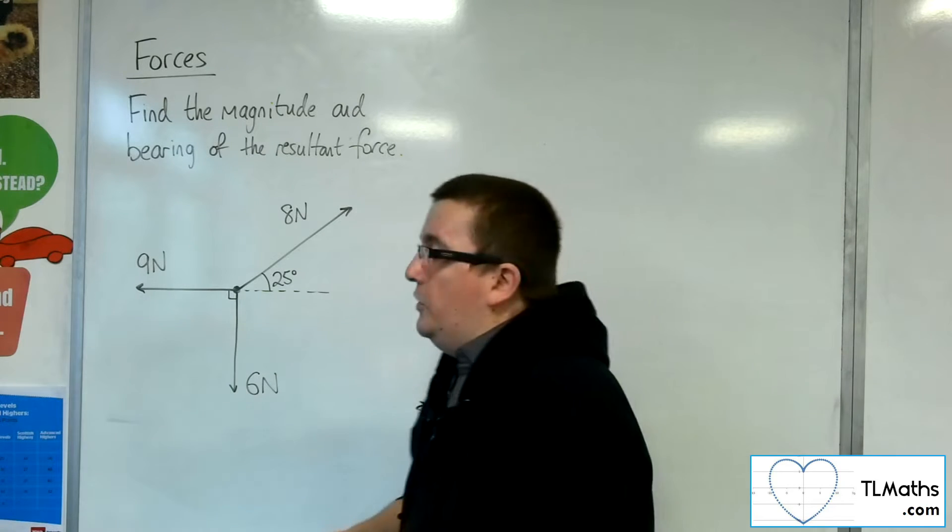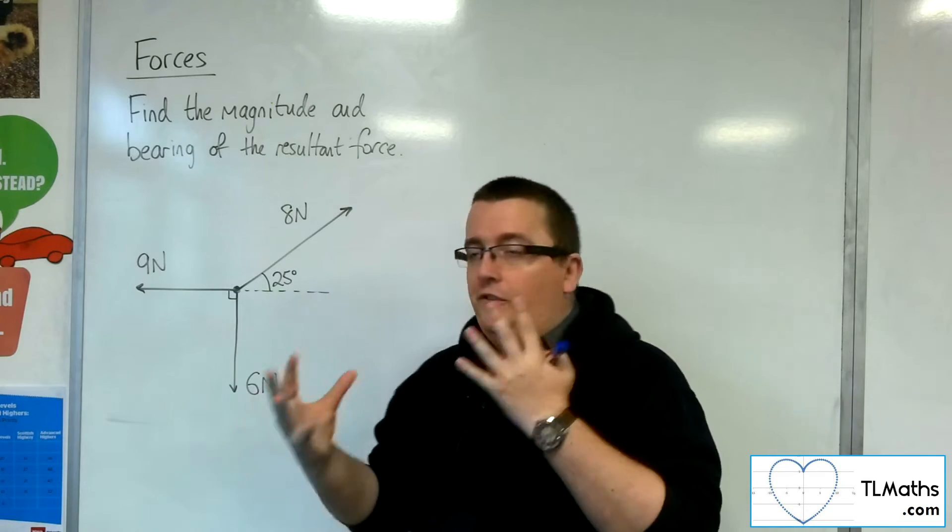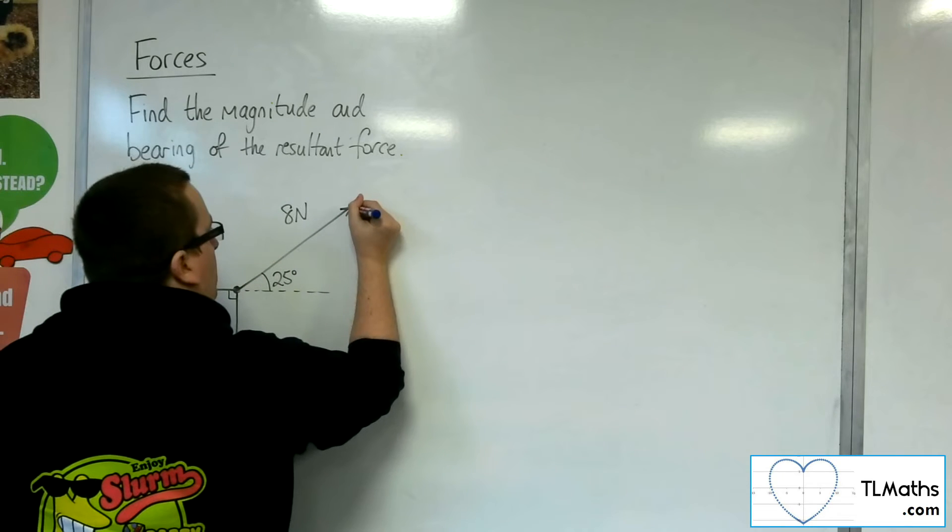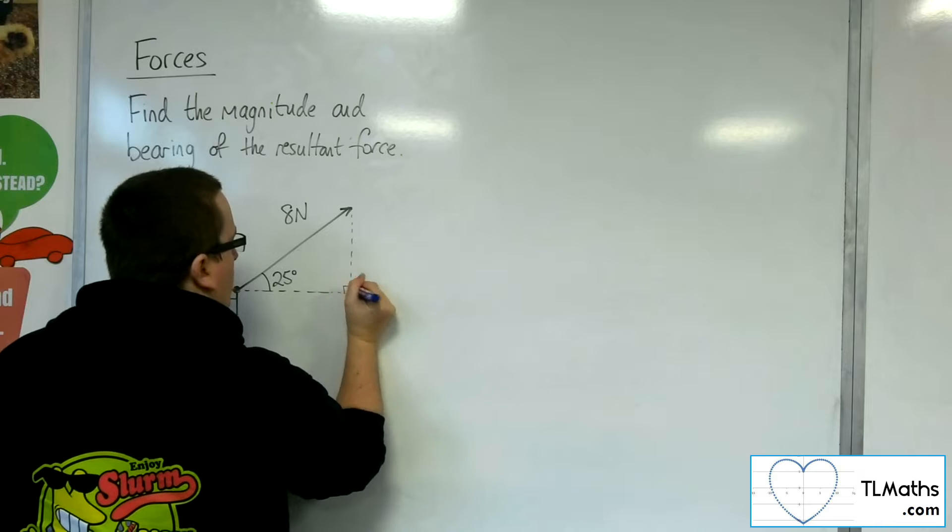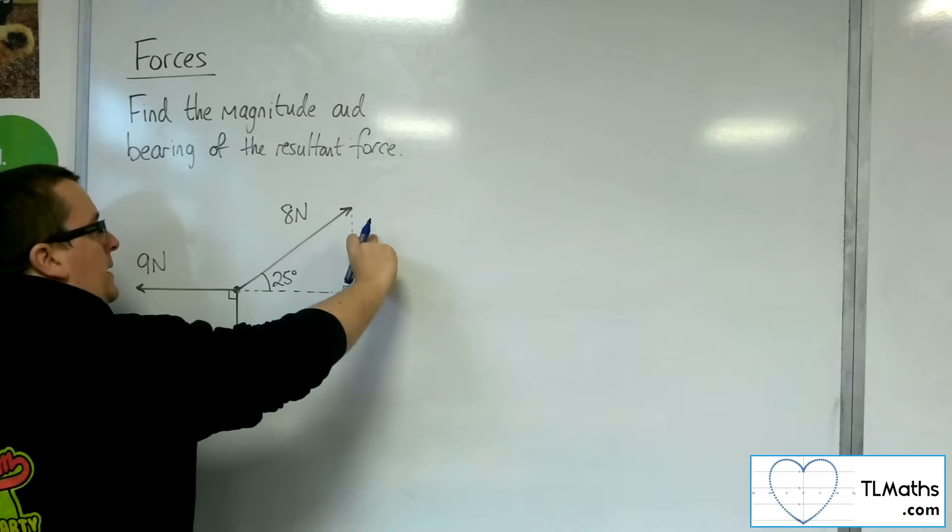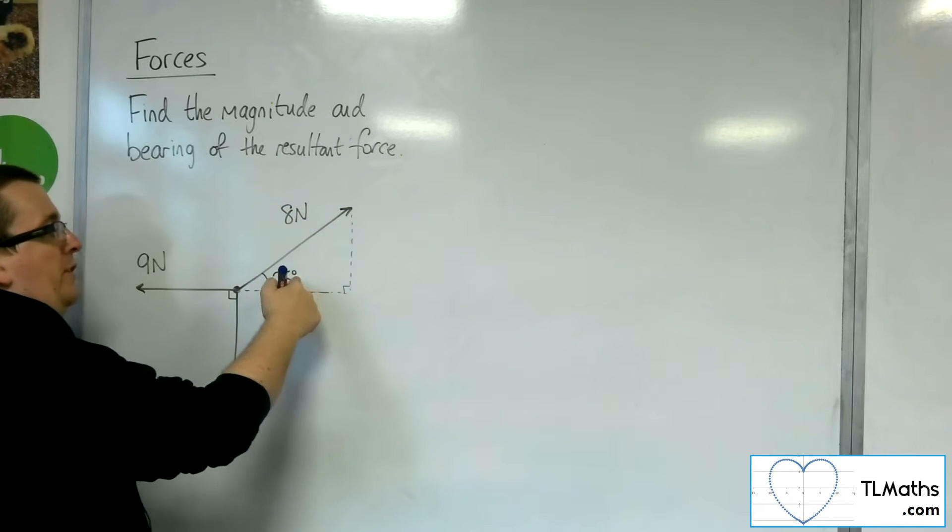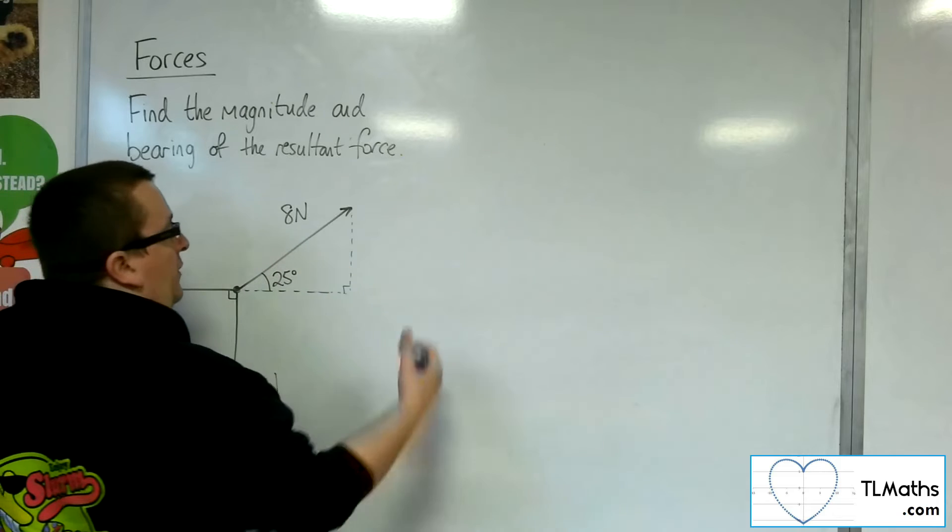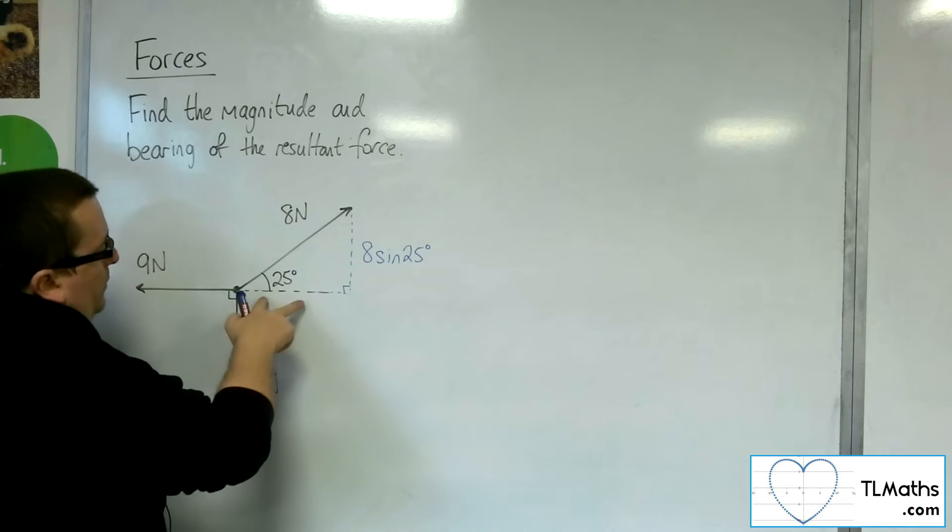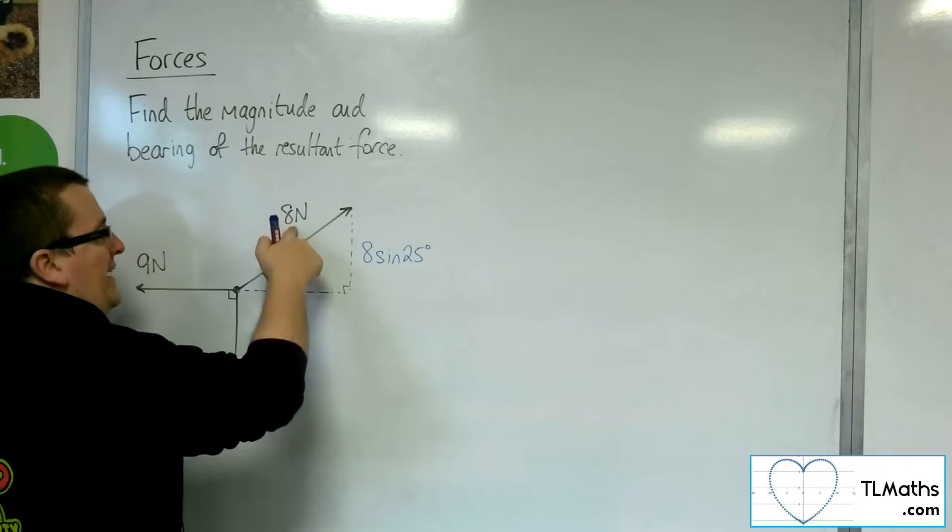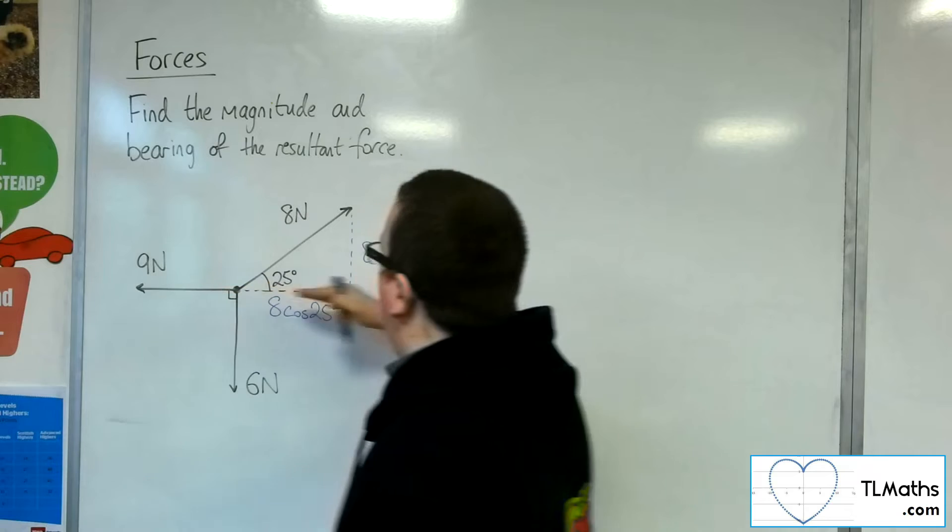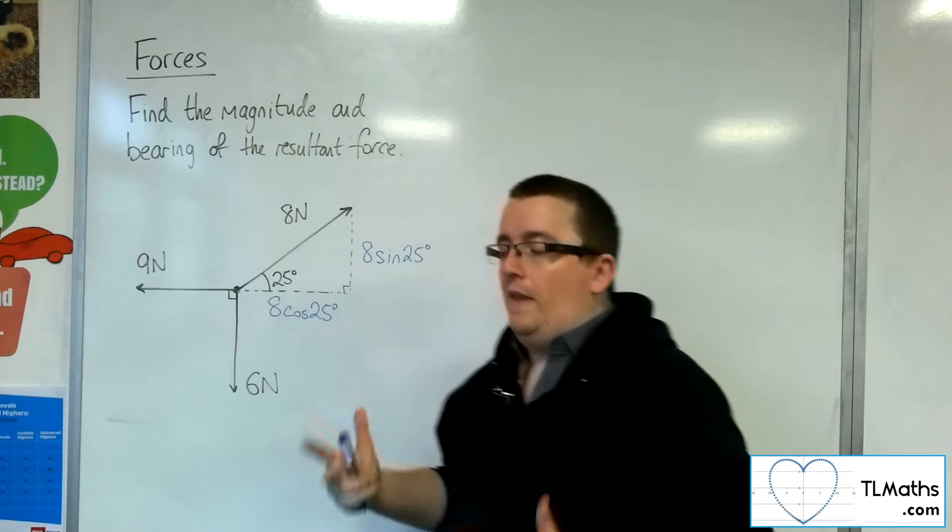So what we're going to do is we are going to write all of these forces down, and we're going to break this one up into its component parts. So if I complete the right angle triangle there, then I could write down that the opposite side of that right angle triangle will be 8 sine 25, because it's the opposite side, and we're using SOHCAHTOA in there, so 8 sine 25. And we've got the adjacent side, so that's cosine, so 8 cosine 25. So we now have the horizontal and vertical components of that force.